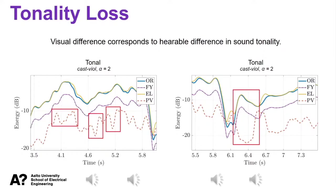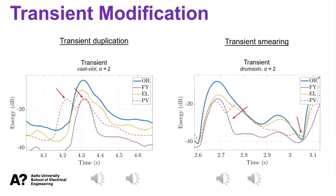Typical transient artifacts also emerge from comparison of fuzzy energy curves. We have a case of transient duplication with the castanet violin sample using the phase vocoder — the duplication is clearly evident when comparing the original and time-stretched versions. We can also spot transient smearing: with the drum solo sample, the fuzzy PV fails to accurately follow the offset of the first transient and misses the steep transition into the second one. This is confirmed by listening — the smearing is clearly audible in the time-stretched track.